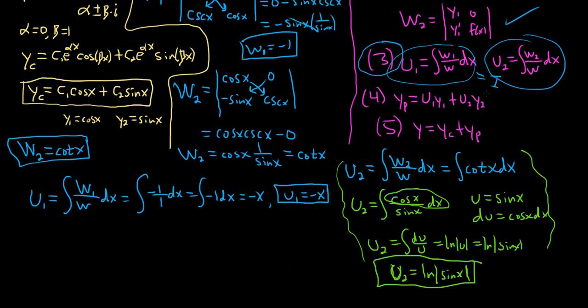Okay, so we've done the U's. Now we just have to form YP. So YP is equal to U1 Y1 plus U2 Y2. So U1 is negative X, Y1 is right here, it's cosine X. It's a nice problem. This wasn't too hard. And then U2 is this here, the LN absolute value of sine X. So LN absolute value of sine X. And then Y2 is just sine X. Okay?